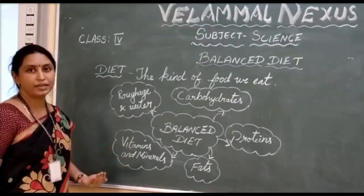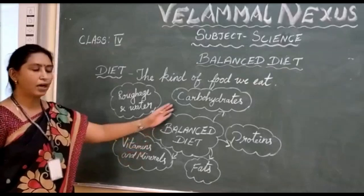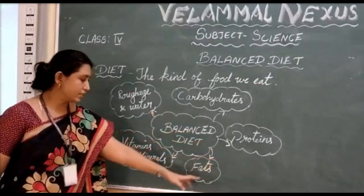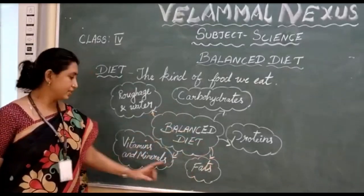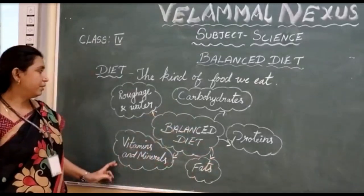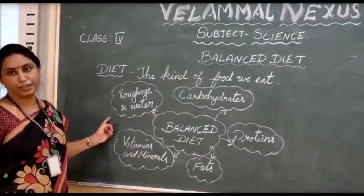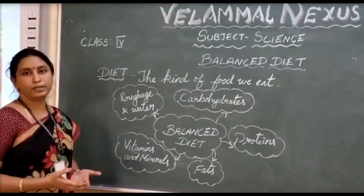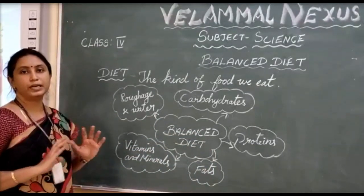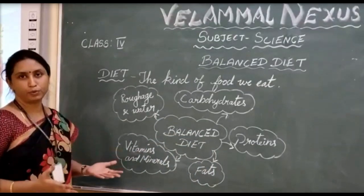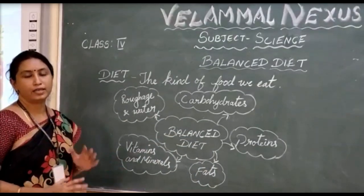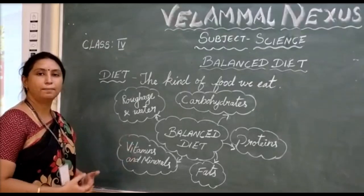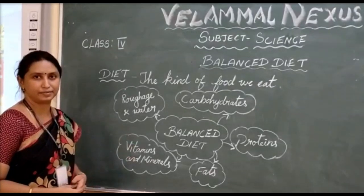So what are the nutrients we have seen? Carbohydrates, proteins, fats, vitamins and minerals, roughage and water. All these components should be in the right proportion in your diet. Then the diet should be called a balanced diet.